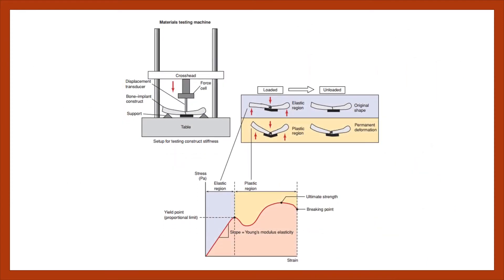The top left picture shows a fixation construct set up in a mechanical testing machine. In this example, a long bone is fixed with a plate and subjected to bending. The top right picture shows the construct during loading in the elastic region and plastic region. The bottom picture shows the resulting measurements, which measure stress and strain at the point of the applied load. The graph demonstrates the elastic region, in which the plate acts like a spring, returning to its original shape after the load is released; the plastic region, in which the plate may have permanent deformity; and the failure load, in which the plate fails. The area beneath the curve, or the pink area, represents the toughness of the material — the amount of energy that the material can absorb before failure.